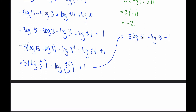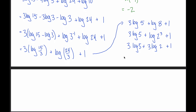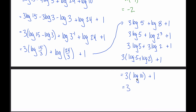Again the coefficients don't match — 3 here and 1 there. Since 8 is 2 cubed, we rewrite log of 8 as log of 2 to the third, then bring the 3 down in front using the third log rule. Now we can factor out the 3: 3 times (log of 5 plus log of 2), plus 1. Using the first log rule, log of 5 plus log of 2 is log of 10, and log of 10 equals 1. So we get 3 times 1 plus 1, which is 3 plus 1 equals 4.